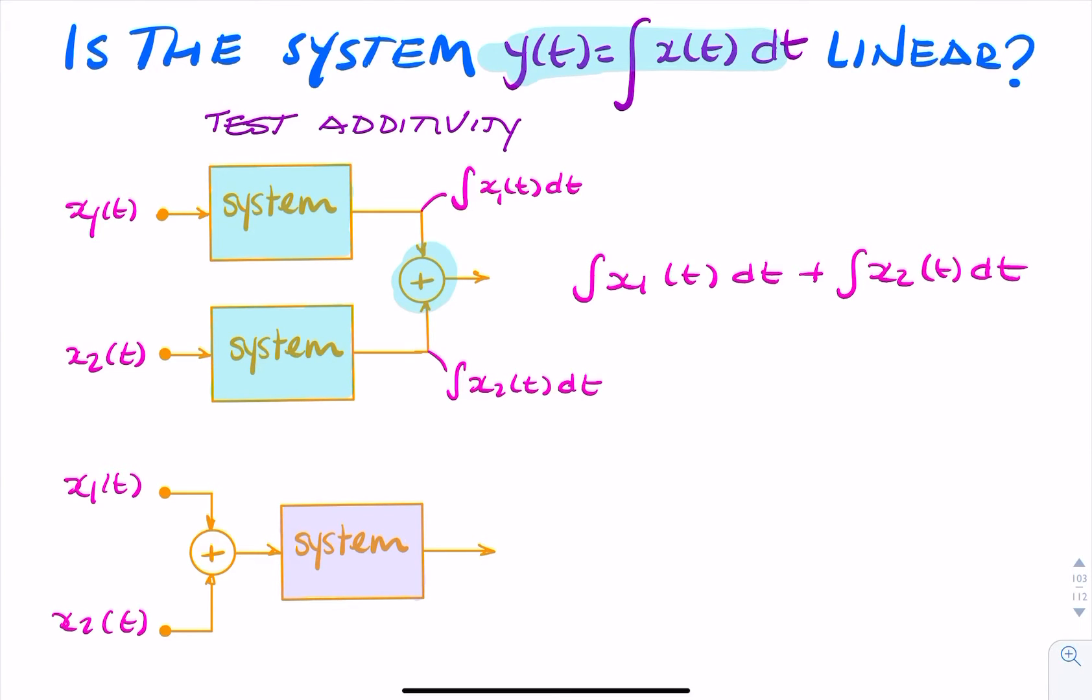Now I try doing that same again, but this time I add x1 and x2 before feeding into the system. So the input to the system would actually be x1 of t plus x2 of t. So that's my input. What does the system actually do? It takes the input x of t and it integrates it.